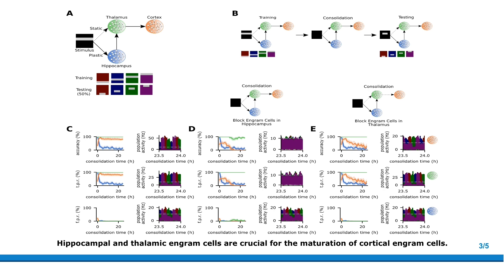Our work investigated engram dynamics and systems consolidation, and we found that coordinated communication in the hippocampus-thalamus-cortex circuit was essential for this process. We started with experimental data from Tony Bhatt's group showing that recent recall relies on the hippocampus, because hippocampal engram cells can be activated by partial cues at a recent time point whereas those in medial prefrontal cortex cannot. However, at a remote time point recall now relies on medial prefrontal cortex because prefrontal cortex engram cells can be activated by partial cues whereas hippocampal ones can no longer be activated.